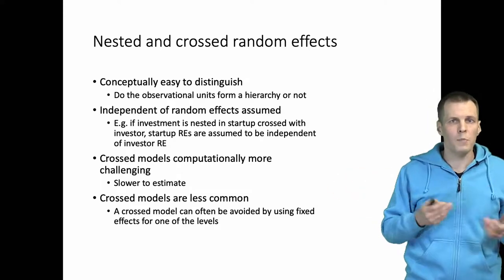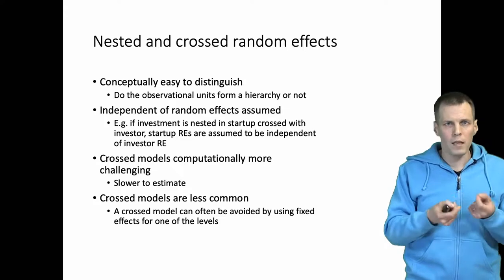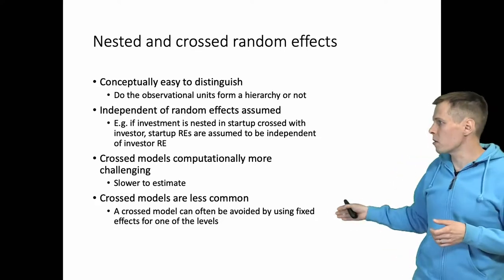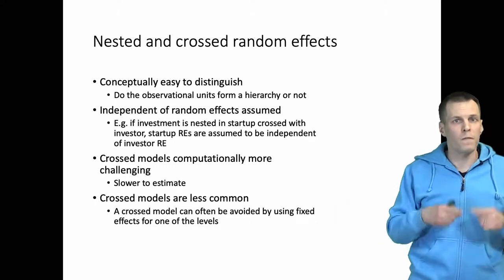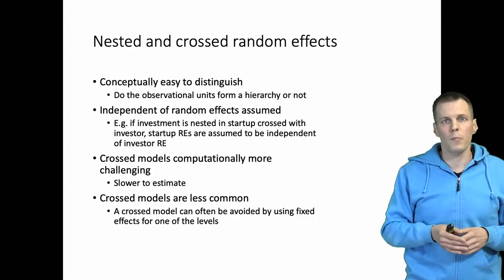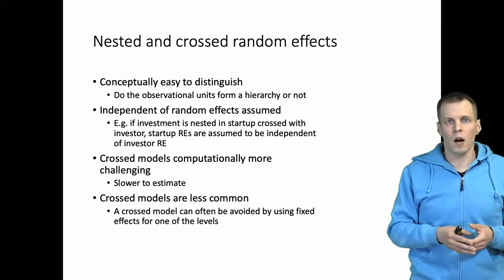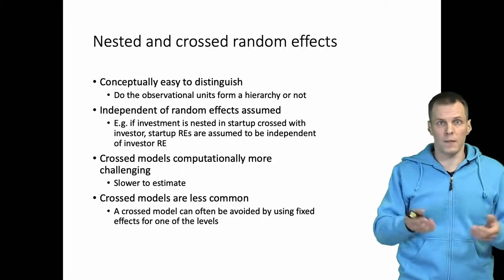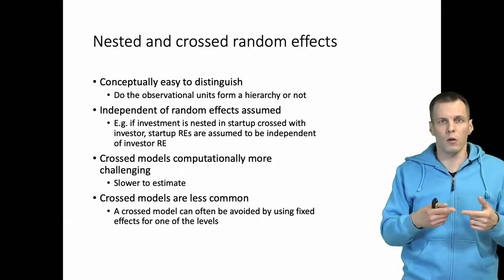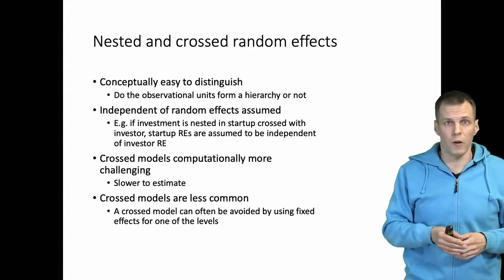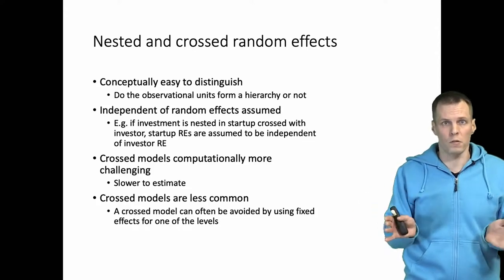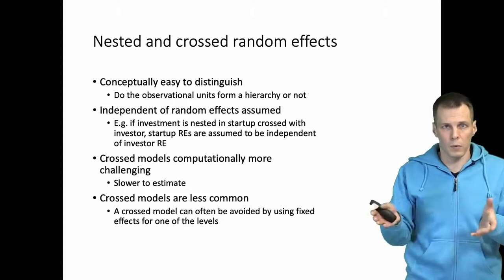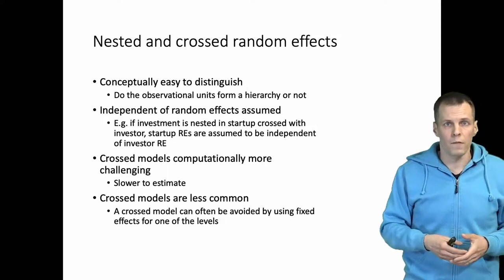Crossed models are less common. Perhaps this is because many things in nature and social life form hierarchies, and cross structures are less common. Or perhaps it is because crossed models can often be avoided by using fixed effects instead of one of the random effects. For example, if we have 500 startups and 50 investors, instead of estimating a random effect for the investors, we could apply fixed effects for the investors, then use a random effect for the startups, and that would eliminate the crossed structure. So sometimes you can avoid a crossed structure by replacing a random effect with fixed effects or dummy variables.